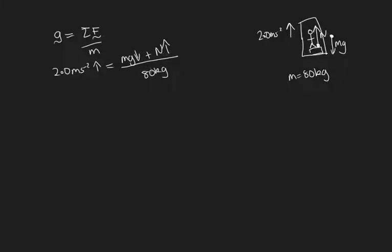Let's rearrange this. We can see that 2 times 80 is 160. And that is a force upwards is equal to mg, which is a force downwards, plus the normal force.